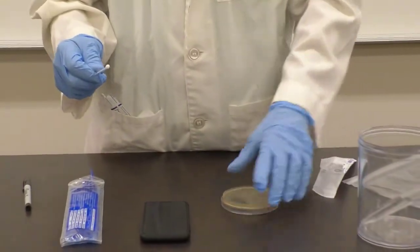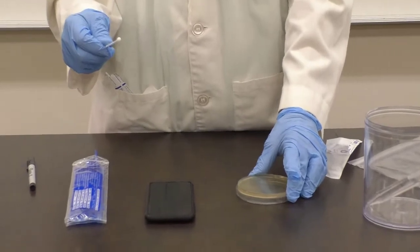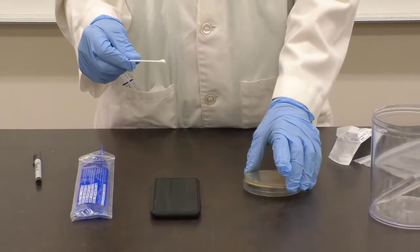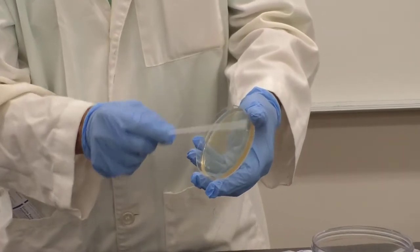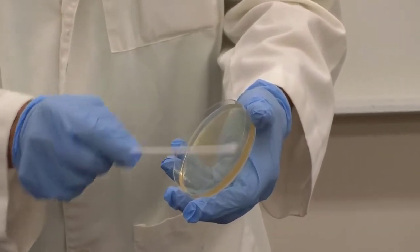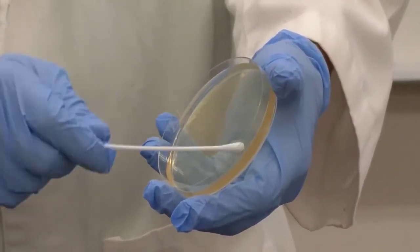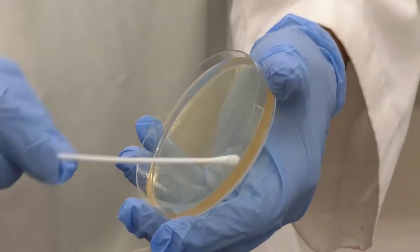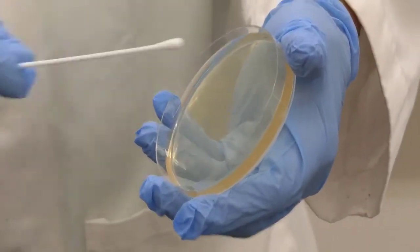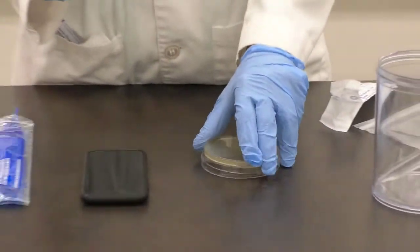Here's our set of tryptic soy agar plates. I'm going to make my initial streak here in one area. Remember, we're going to make a streak plate on this. Trying to transfer as many organisms as possible. That represents our first streak.